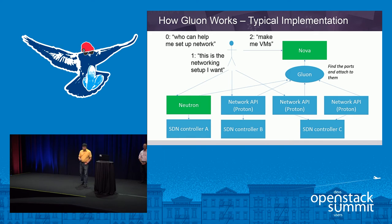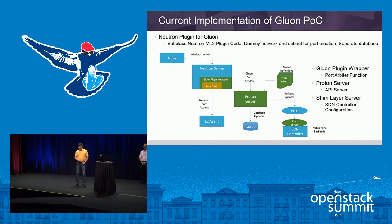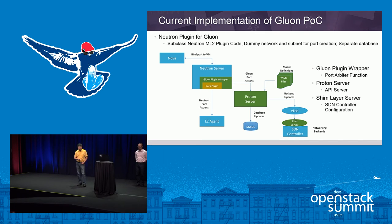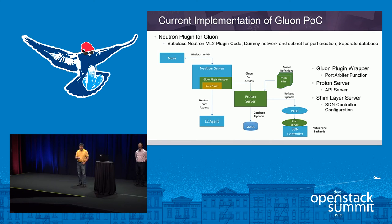Because the network API class in Nova was deprecated due to interoperability concerns, for this OpenStack Summit we implemented using the Neutron plugin method temporarily. Basically, we extended and subclassed the ML2 plugin, created a dummy network and subnets for port creation, and used a separate database from Neutron's database. The extended core plugin determines whether the port is a Gluon port or a regular Neutron port. If it's a Gluon port, it goes back to the Proton server with the AT&T controllers as backend; if it's a regular Neutron port, it goes back to the regular core plugin and the L2 agent.